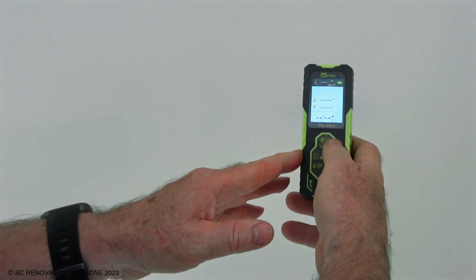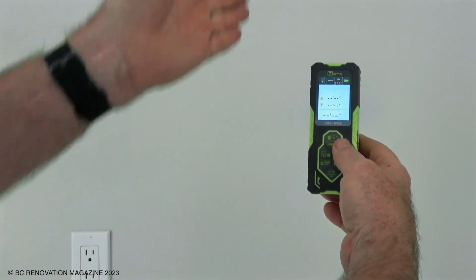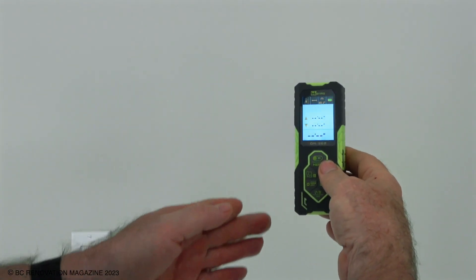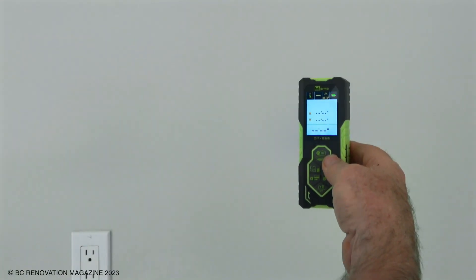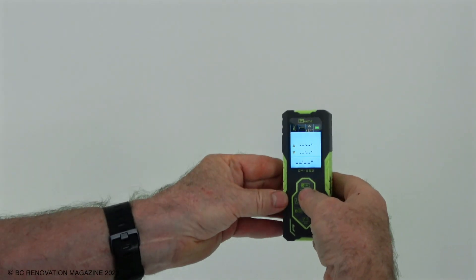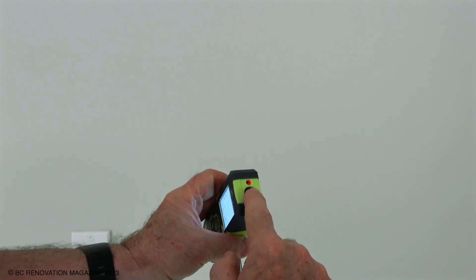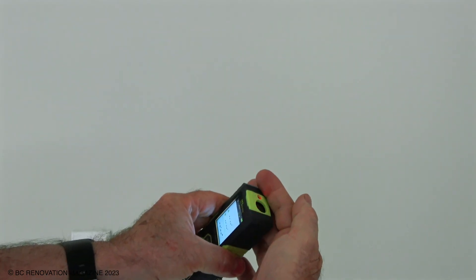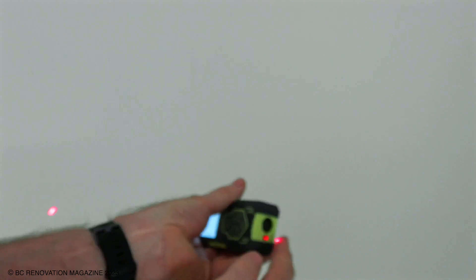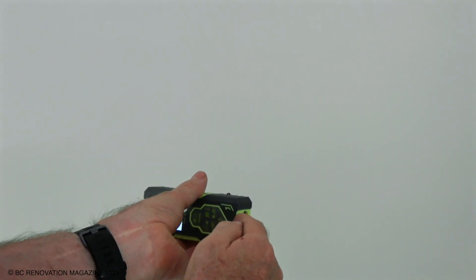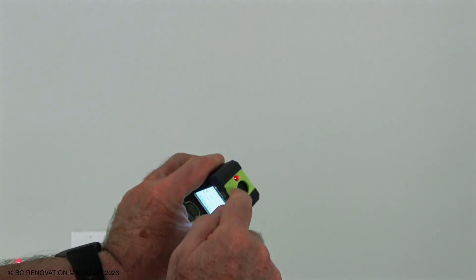So right now it's in a vertical orientation, so we're set up to take a measurement up and down. The unit projects the laser beam from each end of the unit, so you can see it here and here. And then there's a receiver here that the beam comes back and it takes the calculation.